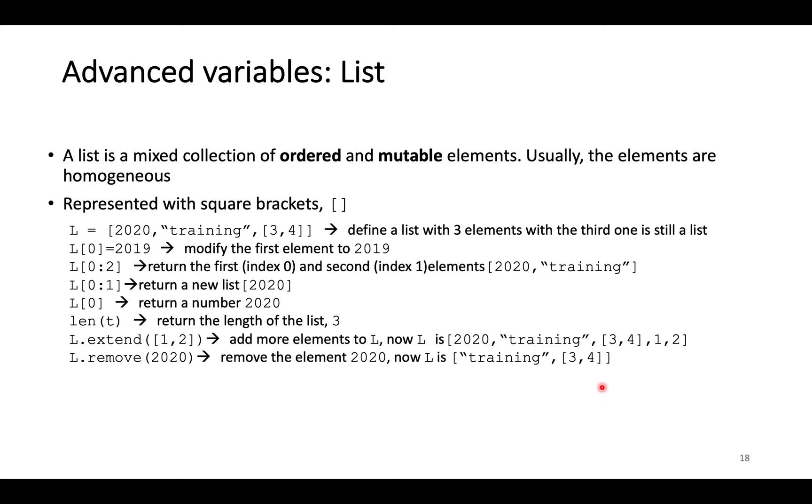The first advanced variable is list. It is used frequently in this training course. List uses square brackets in definition. It is able to contain mixed variable types. Here is a list incorporating numerical value, string value, and even new list.